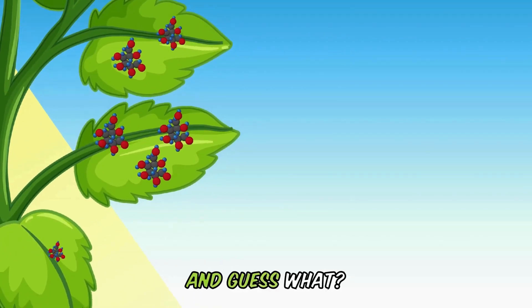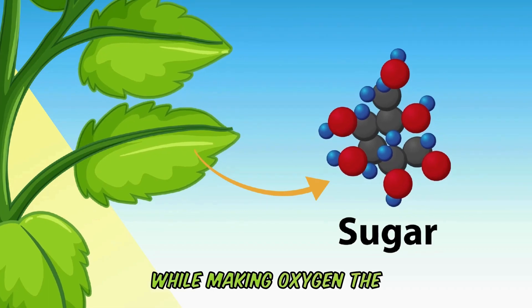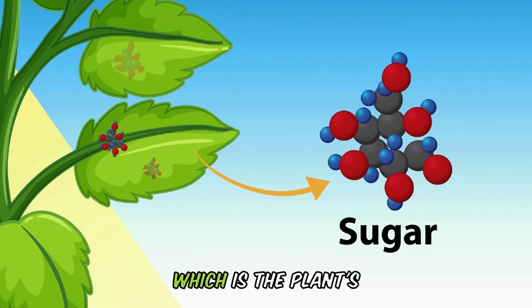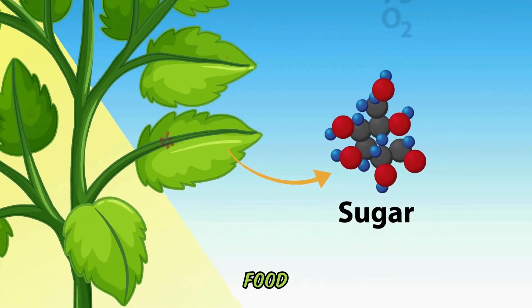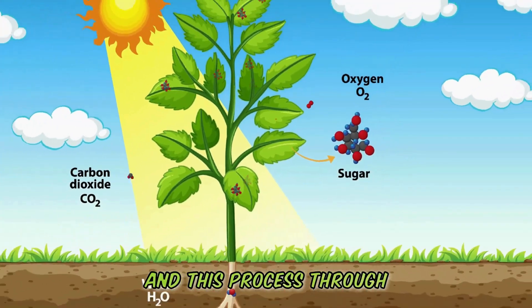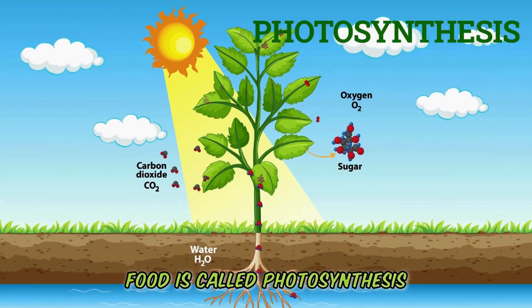And guess what? While making oxygen, the plant also makes sugar, which is the plant's food. And this process through which plants make their food is called photosynthesis.